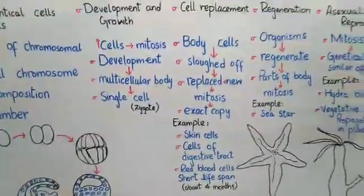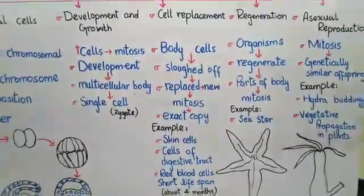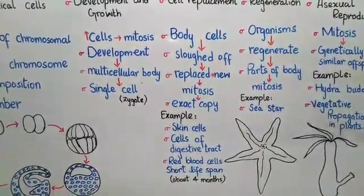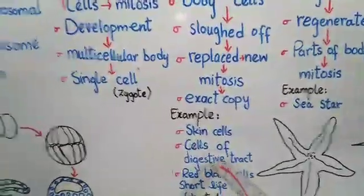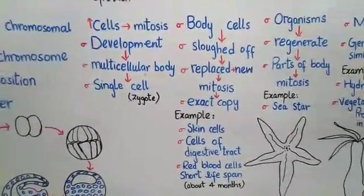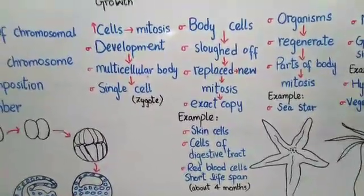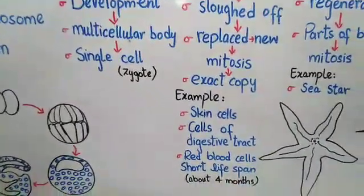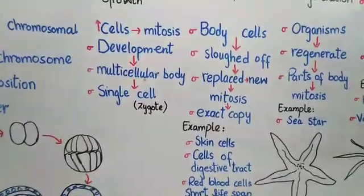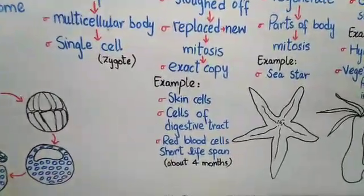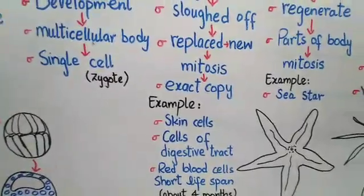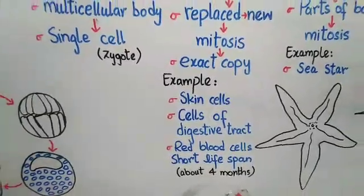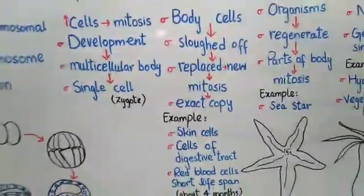Examples of cell replacement include: our skin cells, which are constantly replaced by mitosis; cells of the digestive tract, where food passes and cells are constantly used up and replaced by new ones via mitosis; and red blood cells, which have a very short lifespan — their total lifespan is about four months — and are continuously replaced.